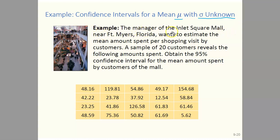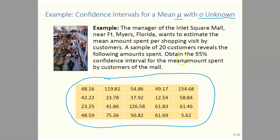In this example, the manager of the Inlet Square Mall would like to estimate the mean amount spent by shoppers per visit. A sample of 20 customers was taken and we have the amounts spent by those 20 customers. We would like to calculate a 95% confidence interval for the mean amount spent by customers at the mall per visit. The first thing we need to do is calculate the mean and sample standard deviation for our data, most easily done using a calculator or Excel.